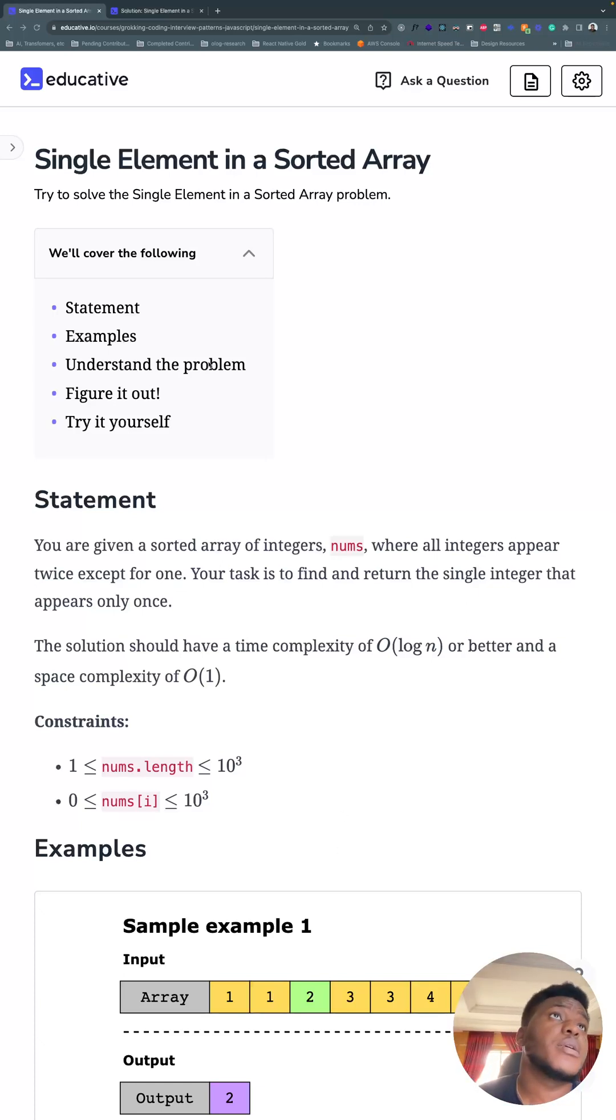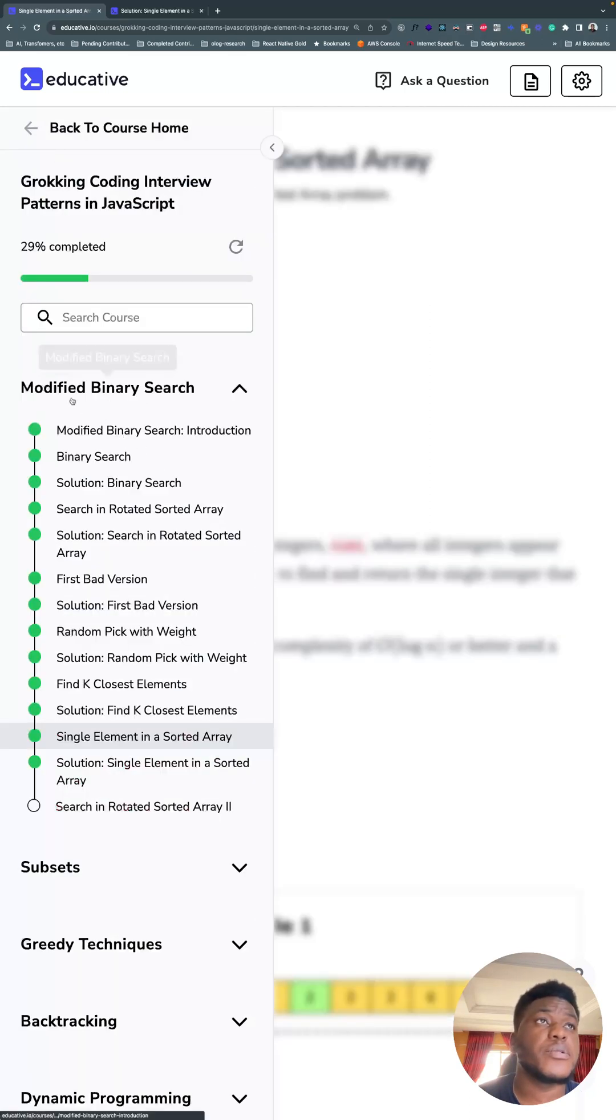All right, new week, new problem. Day 51: single element in a sorted array. According to LeetCode this is a medium problem, and according to educative it falls under the modified binary search pattern, so a group of problems where the solution will involve binary search in some way or form.